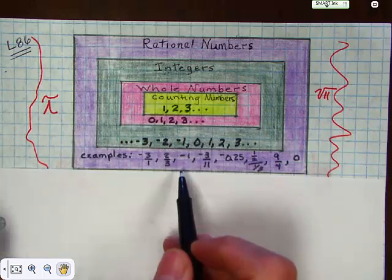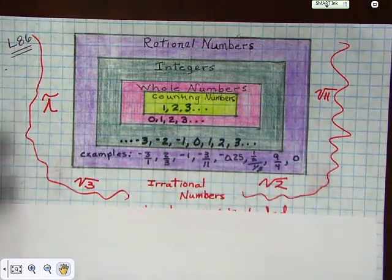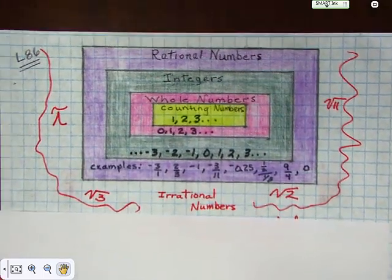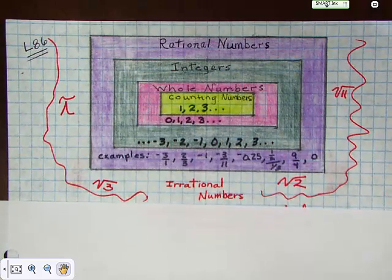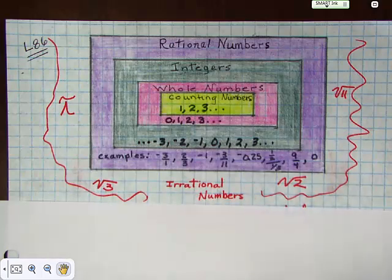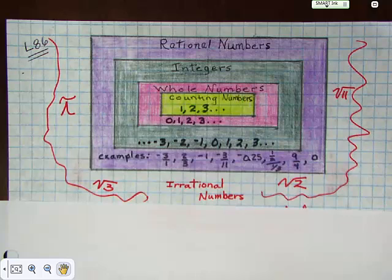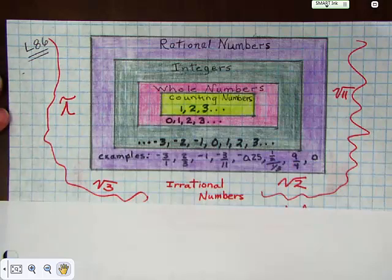Now, what numbers are not included? They're the ones roaming around on the outside in red, and those are called the irrational numbers. You most often see irrational numbers as pi, or square root of 3, square root of 2, or square root of 11. Those are numbers that cannot be written to an end — you can never get to the end of them. They're non-repeating, non-terminating decimals like pi. They go on forever and ever, they don't terminate, and there's no repeating pattern.